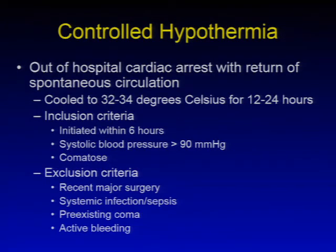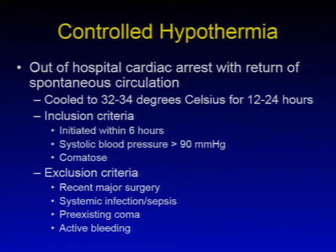For patients for which controlled hypothermia is necessary, out-of-hospital cardiac arrest is one of the indications. Patients are cooled to 32 to 34 degrees Celsius for 12 to 24 hours. Inclusion criteria include if it is initiated within six hours after arrest, systolic blood pressures are maintained greater than 90 mmHg, and the patient is in a comatose state.